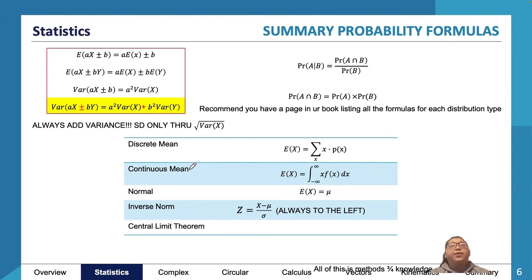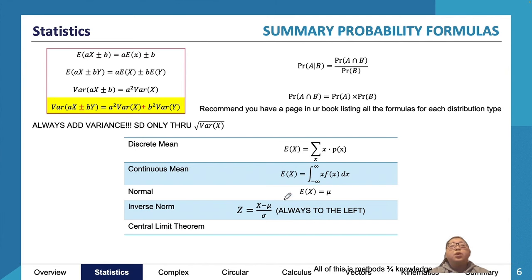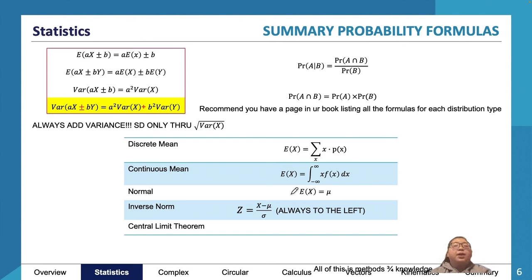To find the mean, multiply each value by its probability. For a normal distribution, the mean equals mu; for binomial, it equals np. Inverse normal always uses the standardised z-score and is always to the left on the TI-Nspire — ClassPad users can choose which tail. Remember the central limit theorem: you can approximate samples via a normal distribution if told to do so.